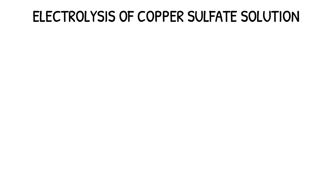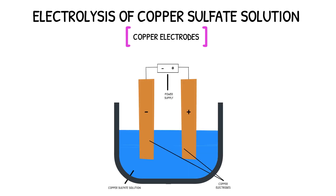The electrolysis of copper sulphate solution using copper electrodes yields slightly different results. The apparatus used is almost identical to that seen previously, only this time the electrodes are not made from graphite but from copper metal. At the cathode, the copper metal used is pure; however, the copper metal used for the anode is impure.